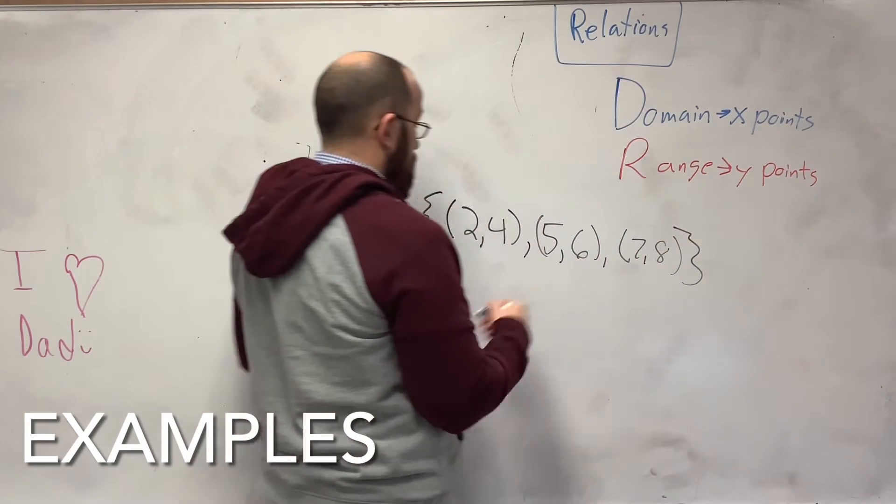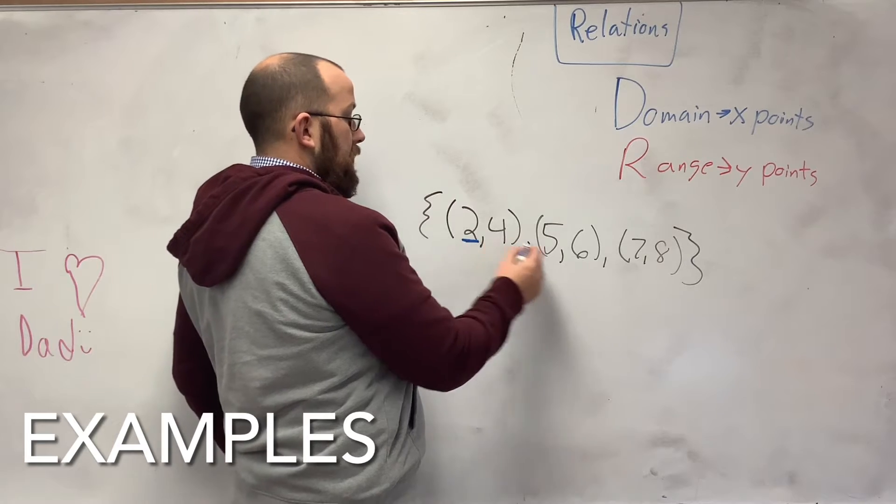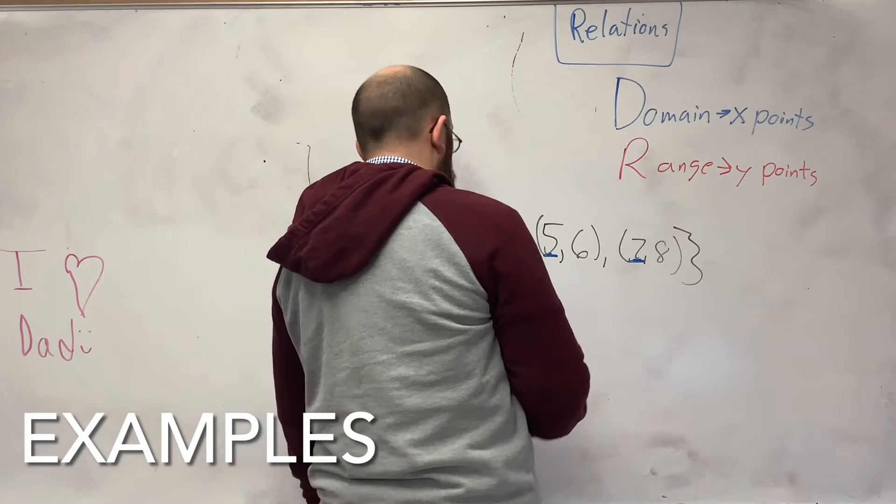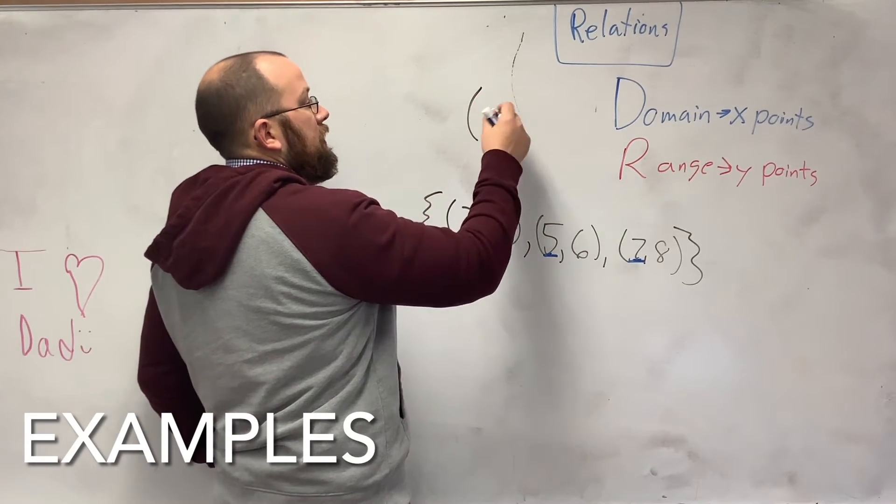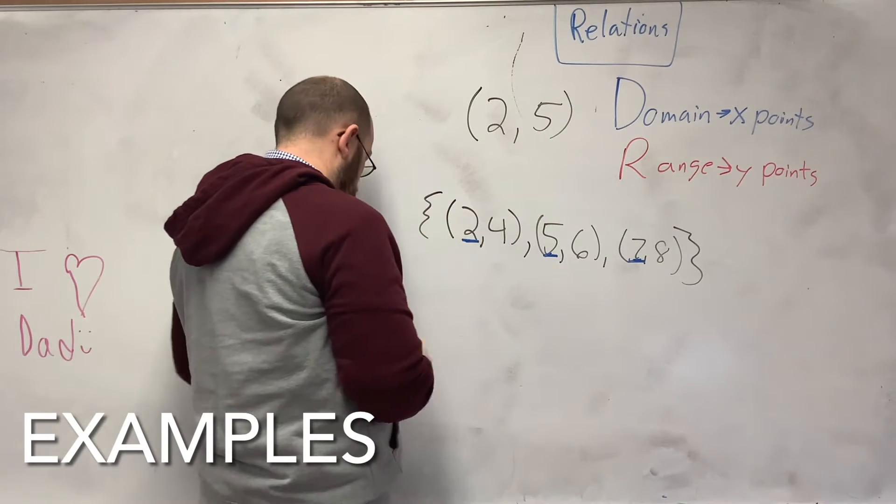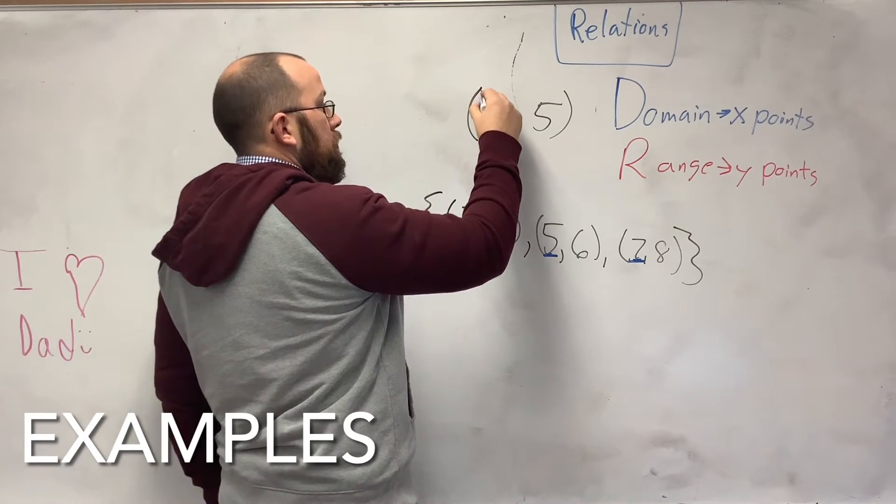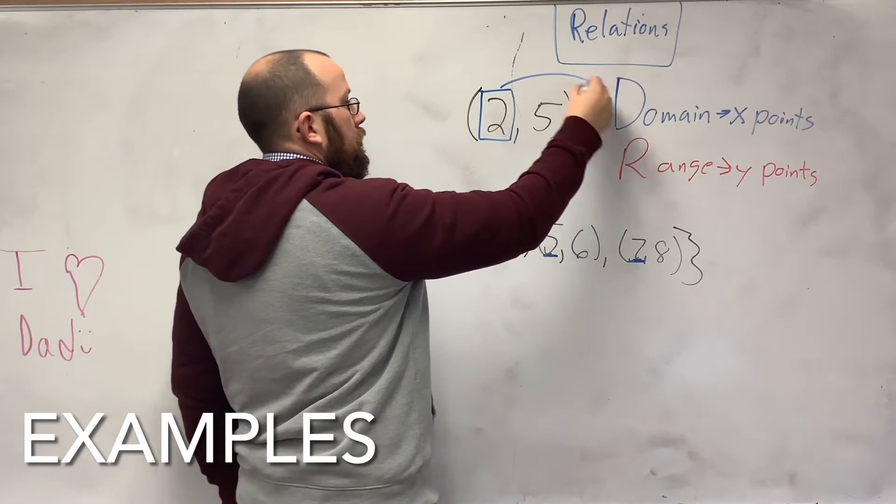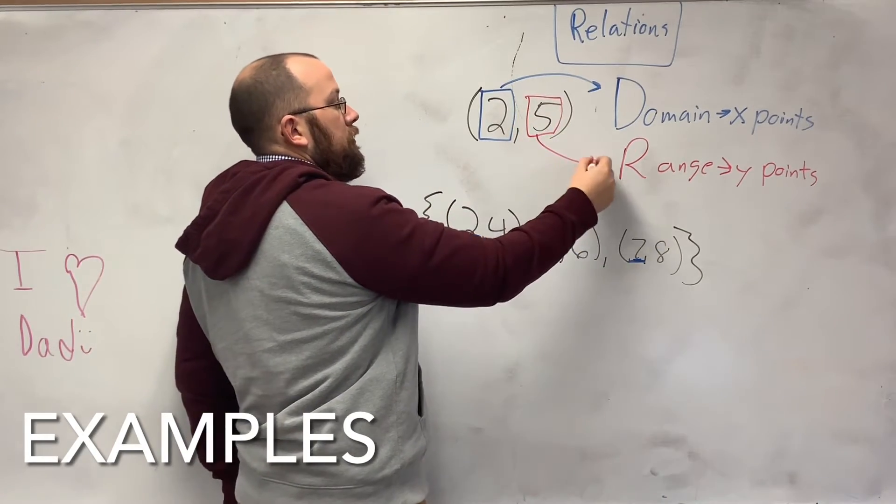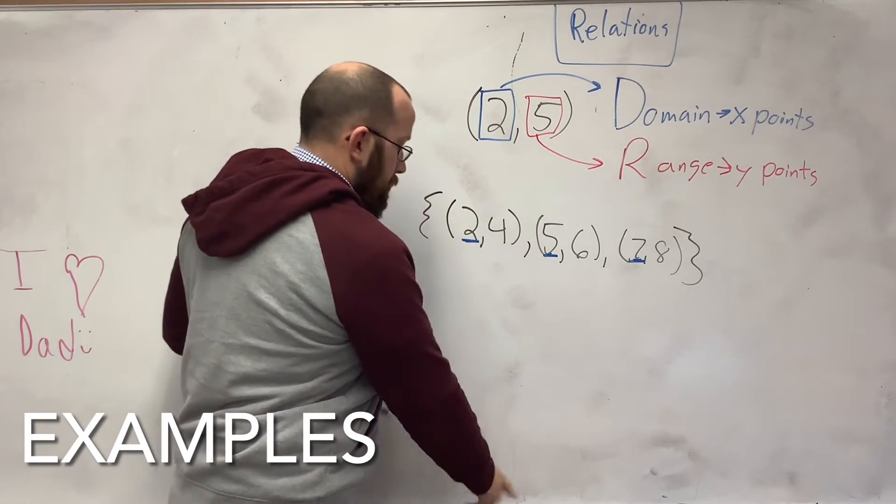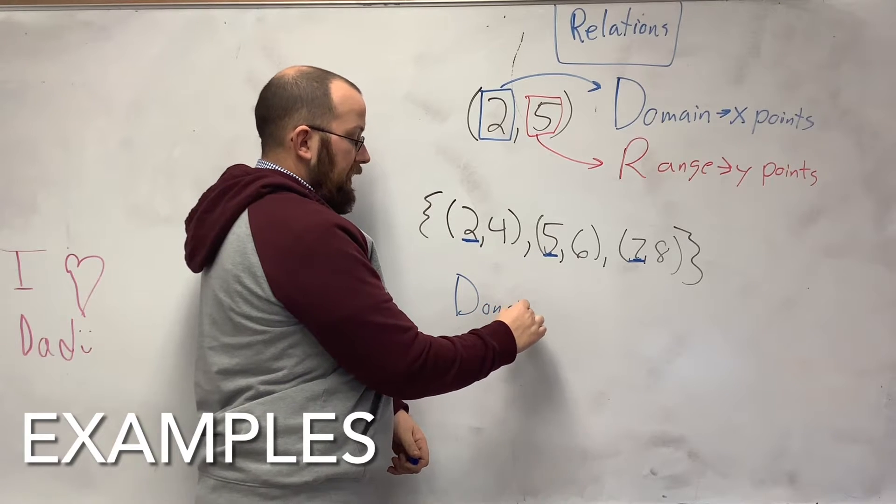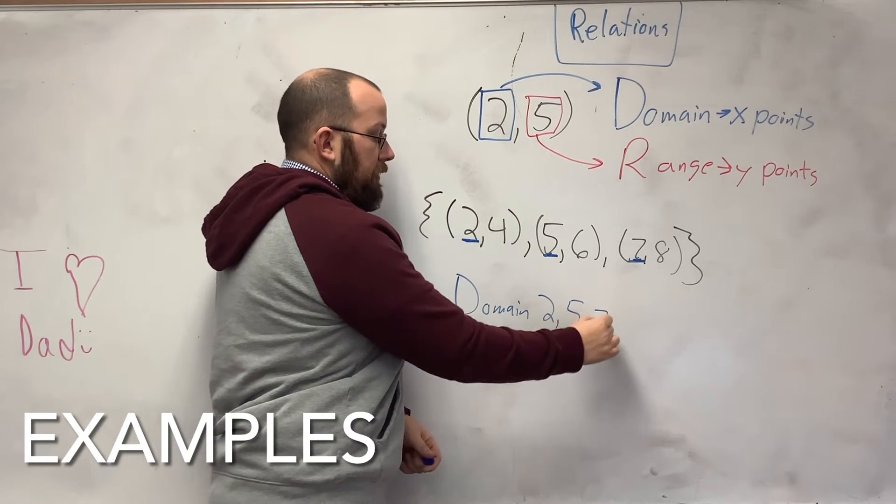Well, my domain is all of the x points, or all of the first points for each individual one. So if I wrote this up here, if I said (2, 5), the domain is always my first number. So if I don't know what the domain is here, I would say {2, 5, and 7}.